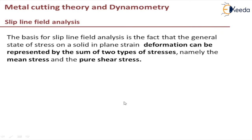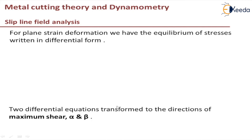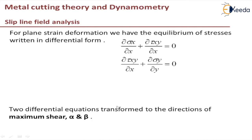The basis of slip line field analysis is that the general state of stress on a solid in plane strain deformation can be represented by two types of stress: a mean stress and a pure shear (deviatoric) stress. For plane strain conditions, the mean stress is the average of the other two stresses, and the Tresca criterion applies: sigma-1 minus sigma-3 equals 2-tau.